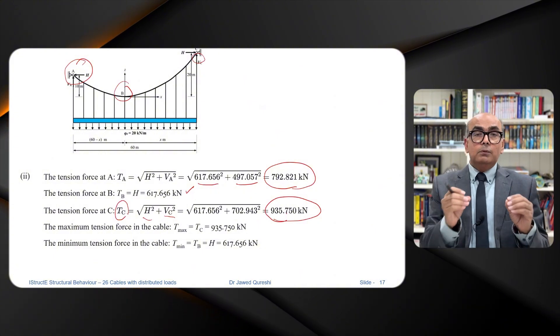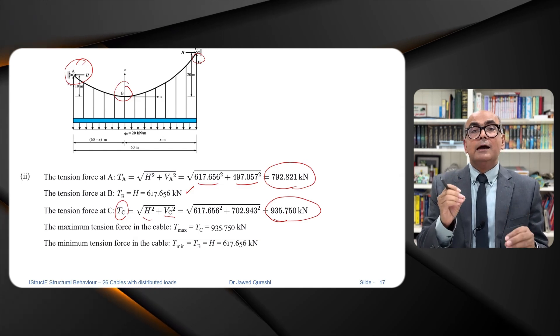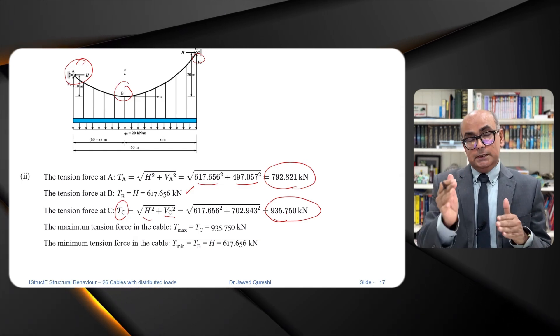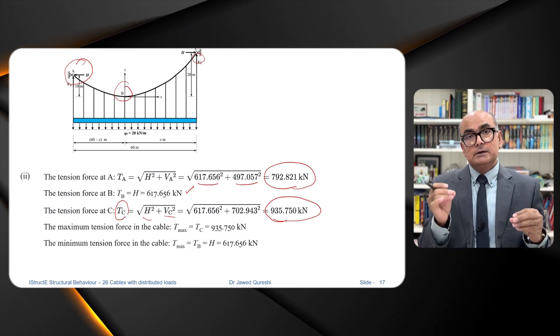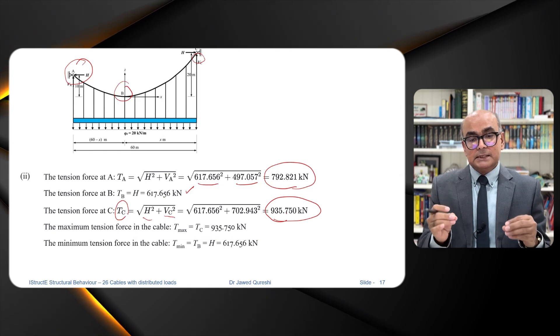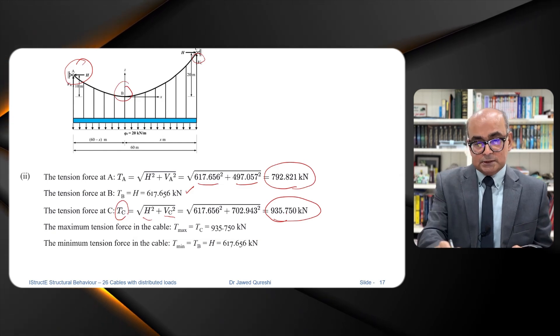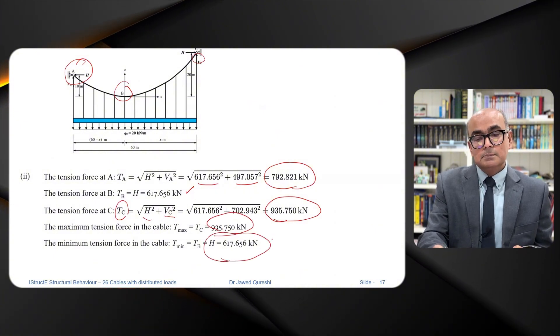You will always have maximum tension at a point where you have highest vertical reaction. In this example we have highest vertical reaction at point C. So that's why we will have maximum tensile force at C which is 935 and minimum will be at point B.